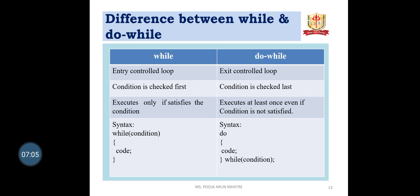Difference between while and do-while: While is known as the entry-controlled loop, whereas do-while is known as the exit-controlled loop. In the while loop, the condition is checked first; in the do-while loop, the condition is checked last. The while loop only executes if the condition is satisfied, whereas do-while executes at least once even if the condition is not satisfied. Syntax — while: while(condition) { code; }. Do-while: do { statement; } while(condition);